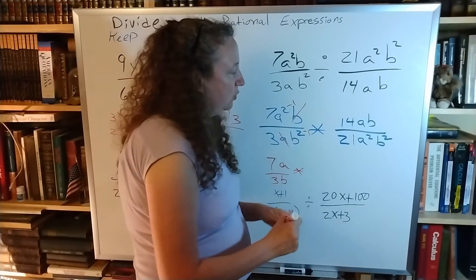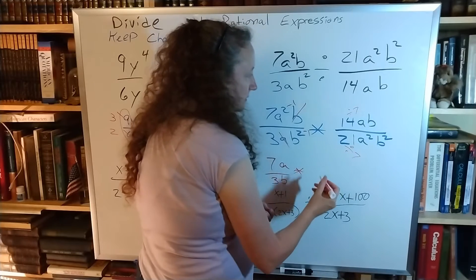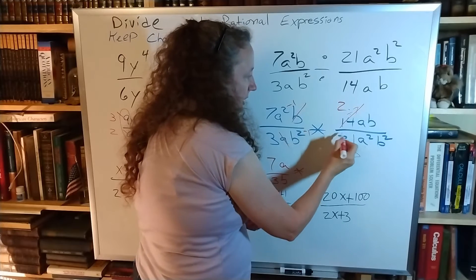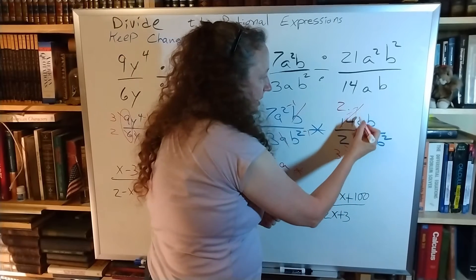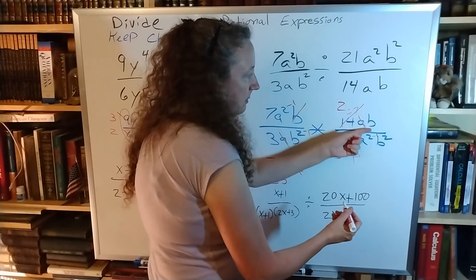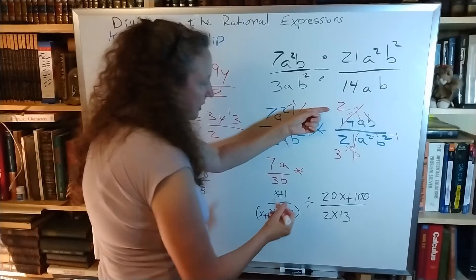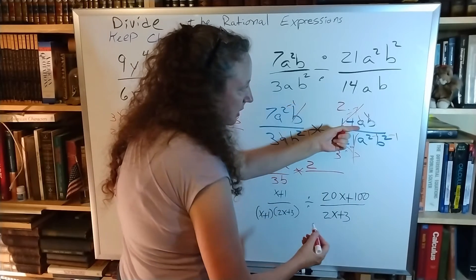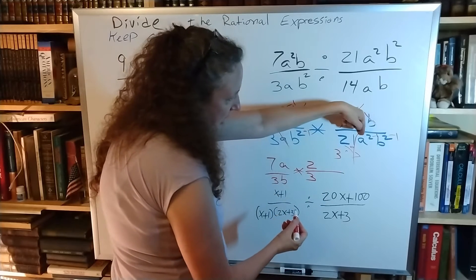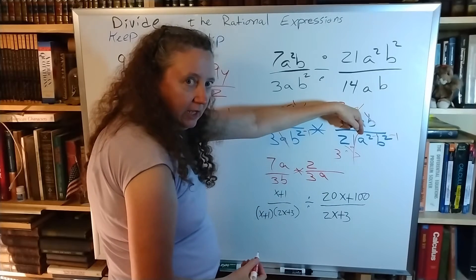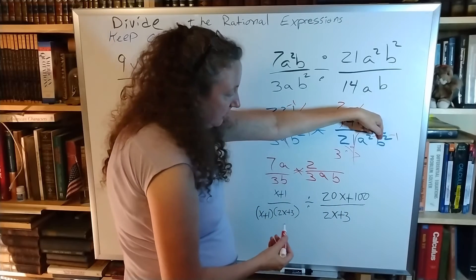Looking over at the second fraction, I see 14 and 21 — both can be divided by 7, giving me 2 and 3. I see a and a squared — cancel that out, subtract 1. I see b and b squared — cancel that out, subtract 1. So on the top I have the 2; the a is canceled, the b is canceled. On the bottom I have 3, a to the 2 minus 1 (just a), and b to the 2 minus 1 (just b).